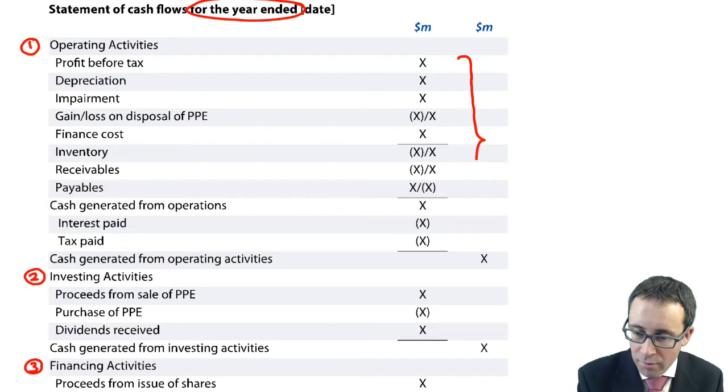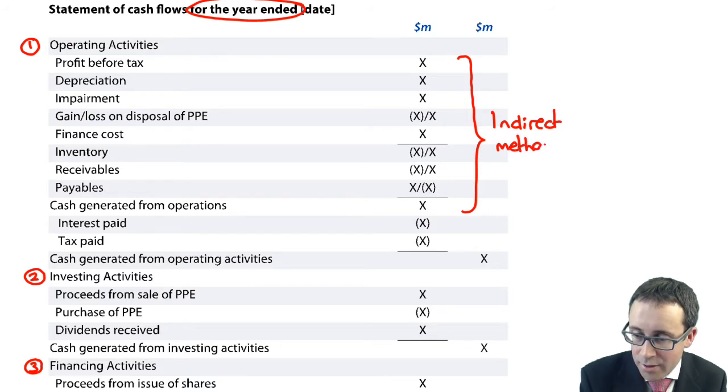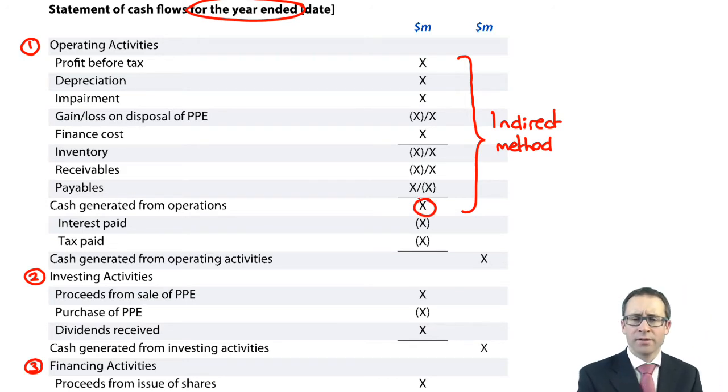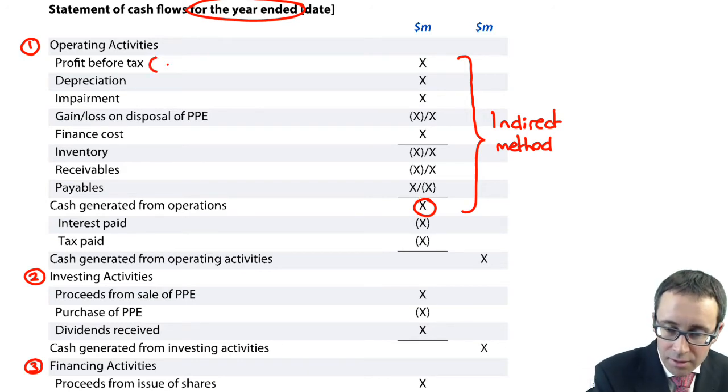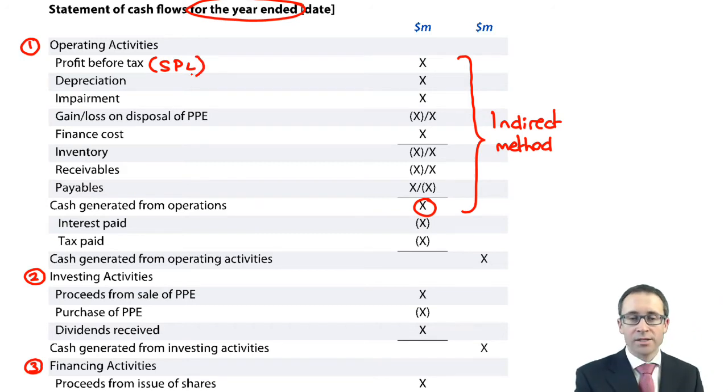The most common way that we see of presenting your statement of cash flows is to use what we refer to as the indirect method. So the indirect method is used to work out your cash generated from your operations. From your day-to-day activities, you start with your profit before tax in your statement of profit or loss. Then you adjust. So you take PBT, we adjust for any non-cash items, we adjust so that we get back to operating profit, and then you adjust for any movements in inventory, receivables, and payables. We will talk about that in more detail afterwards.